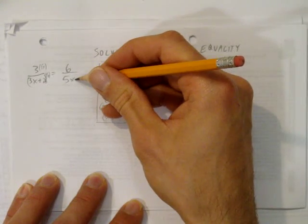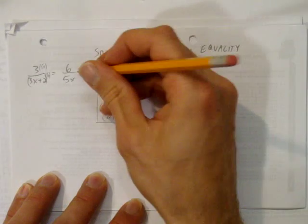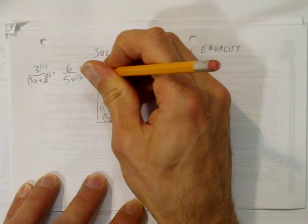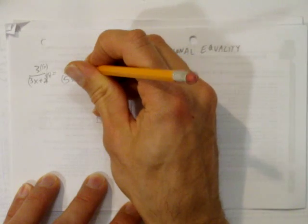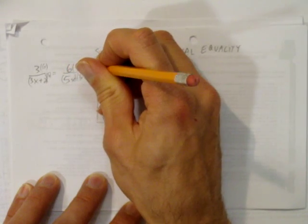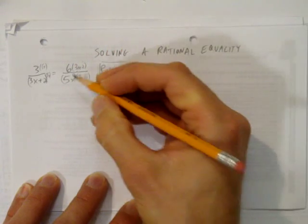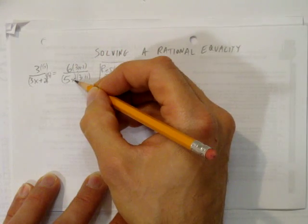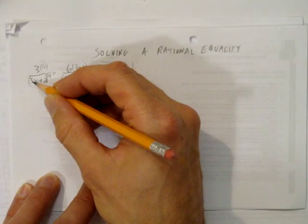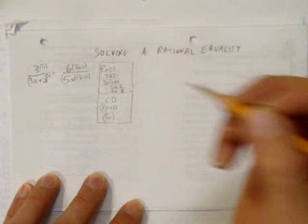And the right-hand side has a 5x in the denominator. It's missing 3x plus 2. We're going to multiply both sides, I should say top and bottom, by 3x plus 2. Notice that I put the factor in brackets here just to show I'm multiplying the whole thing by the new factor.